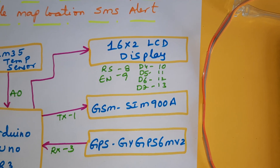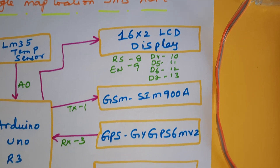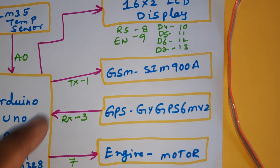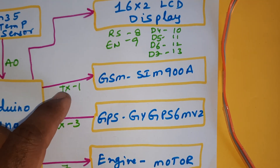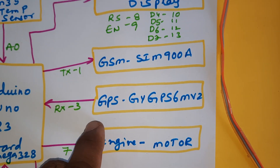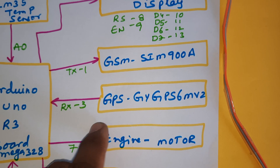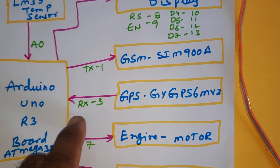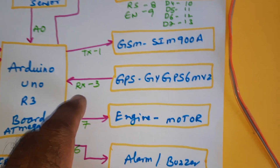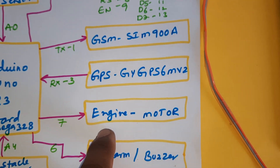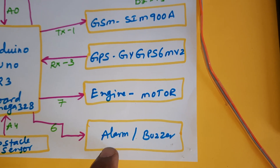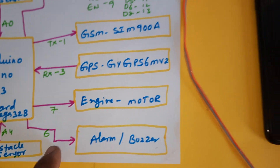The GSM SIM900A module is connected to TX1. The GPS GY6MV2 module is connected via external serial communication to pin 3. The engine is connected to pin 7, and the alarm is connected to pin 6.